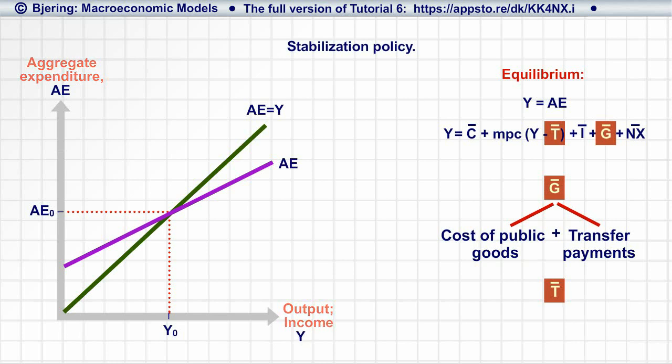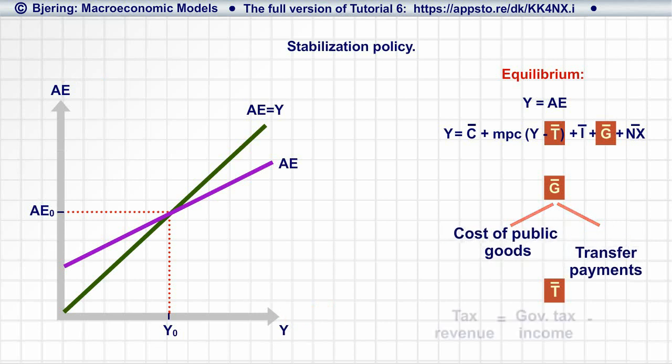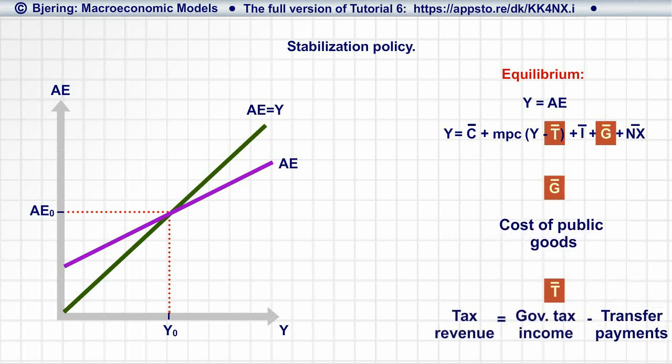In this tutorial, we consider transfer payments to be a negative tax. So the tax revenue, T, is government's income from taxes, less transfer payments, leaving government expenditure, G, to include only expenditure on public goods.